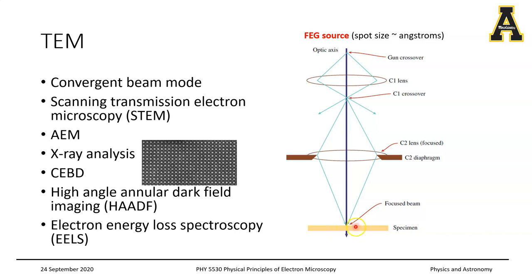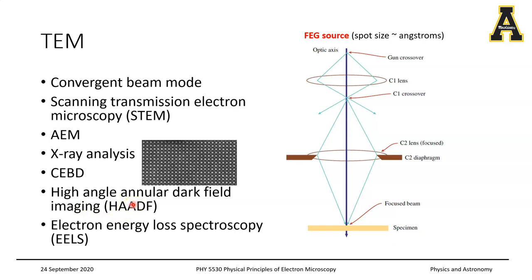Typically your probe diameter in case of a TEM is less than a nanometer. You have a first condenser lens, a C2 diaphragm or C2 aperture associated with your second condenser lens, and essentially you just focus everything onto your sample into a tight spot. Because this is a field emission gun, the beam diameter beginning at the gun crossover itself is very small, so demagnification is not tremendous — a couple of lenses can handle it. You can use this for various modes: for example, electron microscopy, x-ray analysis, CEBD which stands for convergent electron beam diffraction, high angle annular dark field imaging (HAADF), and electron energy loss spectroscopy.